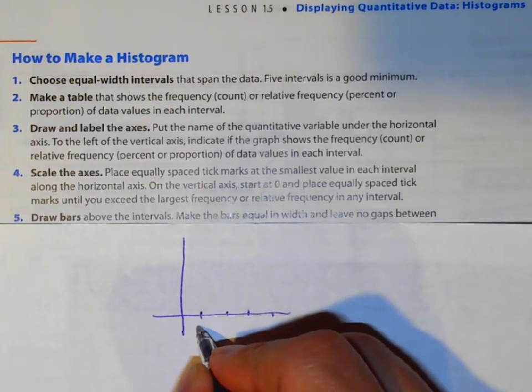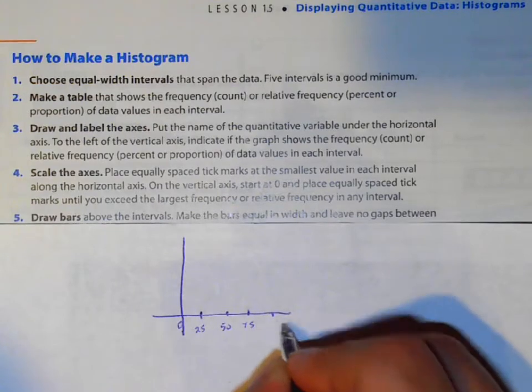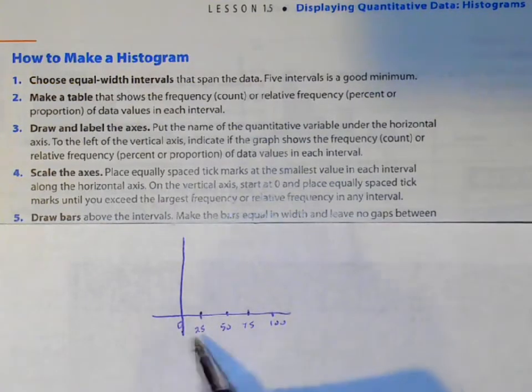Let's say our numbers go from like 1 to 100. So we have 0, we have 25, we have 50, we have 75, we have 100. Make these equal intervals. I went up by 25, you can go up by 10s, by 5s, by 1s, whatever you need to do.